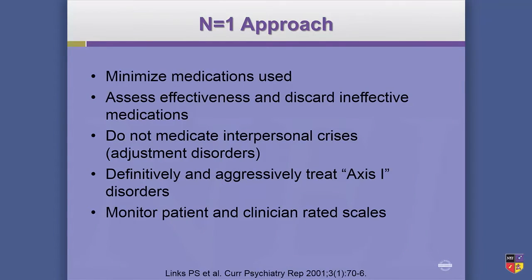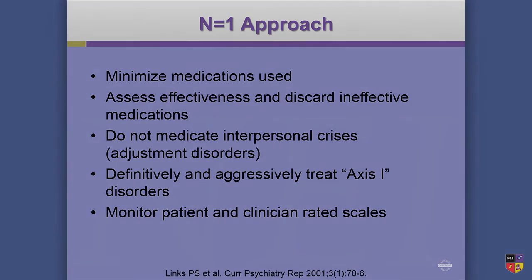Another part of this approach is: don't fall into treating multiple adjustment disorders with medications. If you detect an Axis I condition — and we showed you that 50% of the time they're there — you do have to aggressively treat those. But delineate with your patient: here's your depression that I'm treating, and here's your abandonment fear and your cutting that I'm treating. I'm using one medicine for this and the other for that. Let's measure each thing.